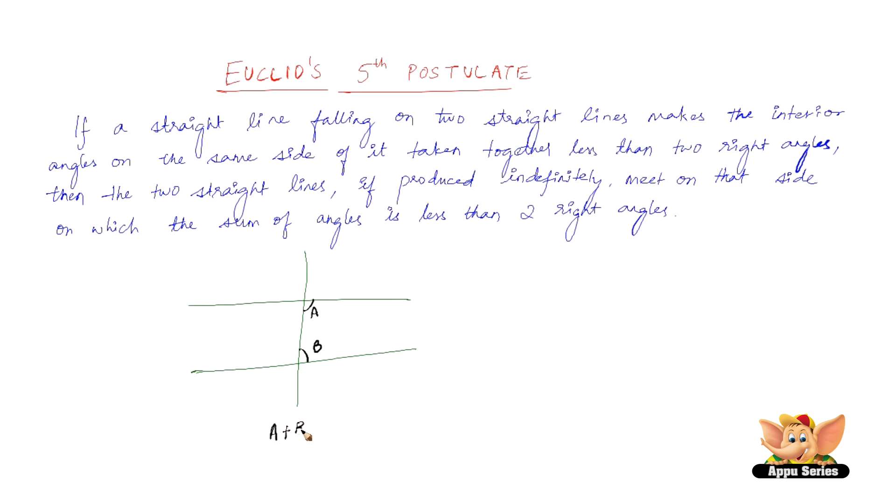Now if the sum of A and B is less than two right angles, these are nothing but 90 degrees. If it is less than 90 degrees, then when these two straight lines are extended indefinitely, these two meet at a point.